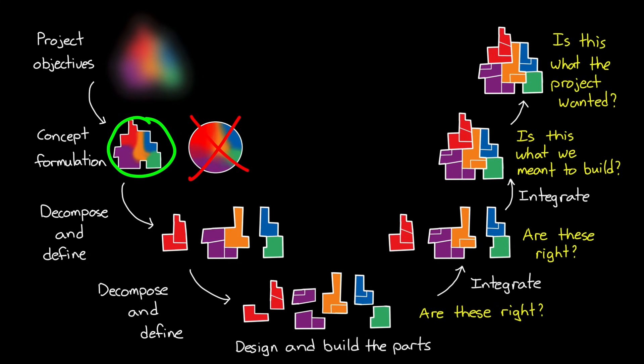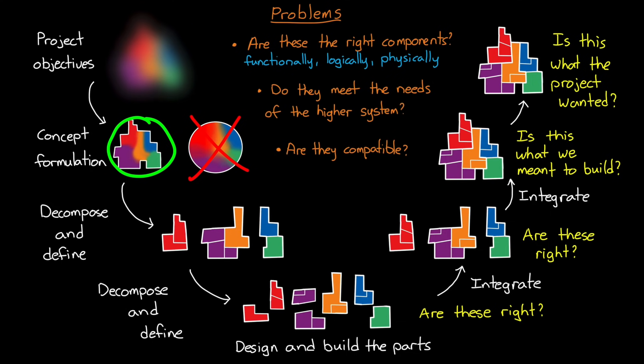However, this approach isn't without its own challenges. New problems arise when you decompose a system into components. Now you need to think about what the best way is to simplify this complexity. What is the best way to split up the system functionally, logically, and physically? And then what should each of these components do so that they meet the needs of the higher level system? And how can we make sure all of the components are compatible with each other so that when they're built, often in different areas, at different times, and by different people, they all come together in the end to meet the needs of the project? These are the challenges of systems engineering and what makes it such an interesting field for people who enjoy solving tough, cross-functional problems.